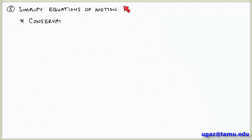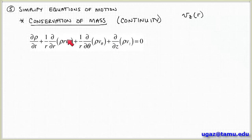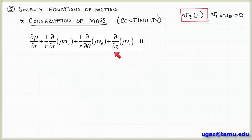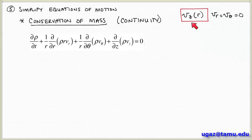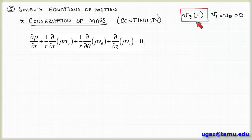We're going to start with conservation of mass. In differential form we call this the continuity equation. This is an expression for conservation of mass in cylindrical coordinates. Up in the corner I've listed a summary of our insights about the velocity vector — we expect the velocity to be in the z-direction only, and it varies only in the r-direction. The strategy is to go term by term through the equations of motion and ask whether each term contributes anything given the constraints we've imposed on the velocity field.